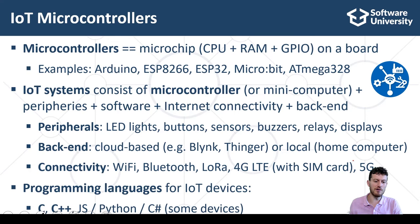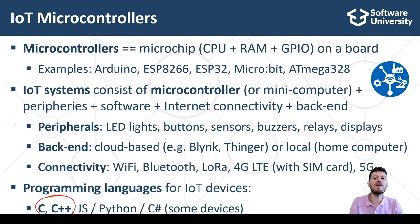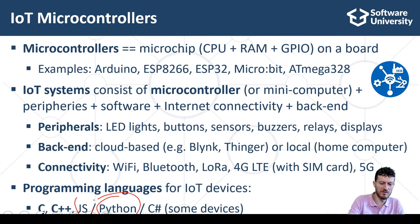Most IoT devices and microcontrollers run with limited resources — small processor, low network connection, and low-capacity battery. This makes C and C++ the preferred languages for programming microcontrollers and IoT devices, as they work closely to the hardware and are designed to use less memory and fewer computational resources. Some IoT devices have more hardware resources, allowing programming in higher-level languages such as Python, JavaScript, or C#.